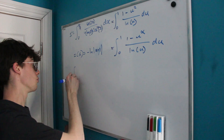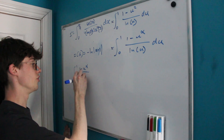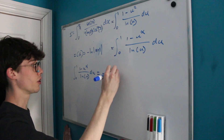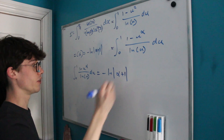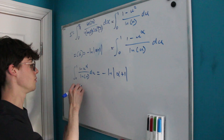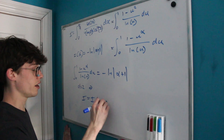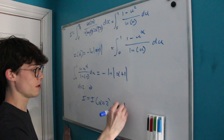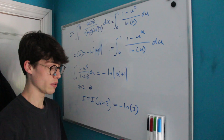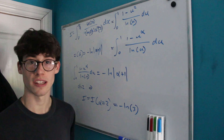Therefore the integral from 0 to 1 of (1 - u^α)/ln(u) du equals -ln(α+1). Since we established that our original integral I equals I(α) evaluated at α = 2, the answer is -ln(3). I hope that was helpful and a good introduction to Feynman's trick — let me know if there's anything else you'd like me to go over. Thanks for watching.